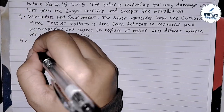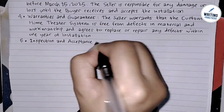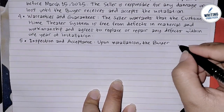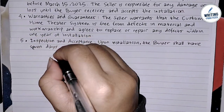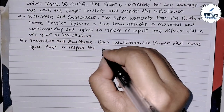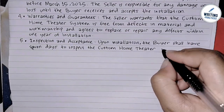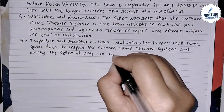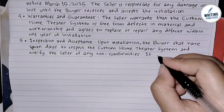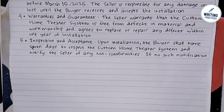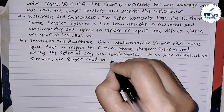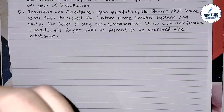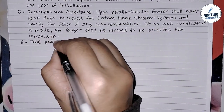In the fifth point, talk about inspection and acceptance. The purpose here is to give the buyer a specified time to inspect the product after delivery and to notify the seller of any issues. For example: '5. Inspection and Acceptance: Upon installation, the buyer shall have seven days to inspect the custom home theater system and notify the seller of any non-conformities. If no such notification is made, the buyer shall be deemed to have accepted the installation.'